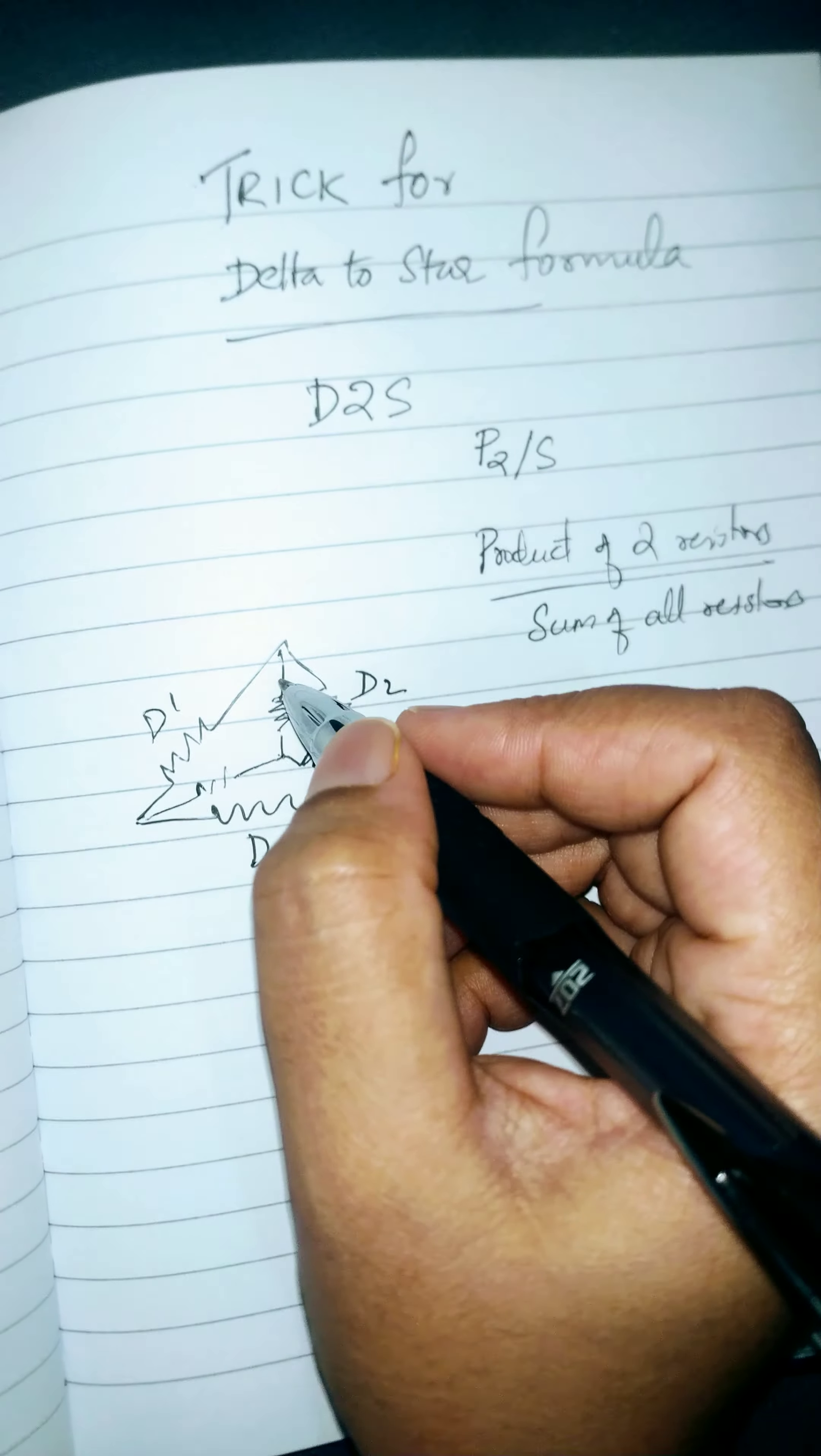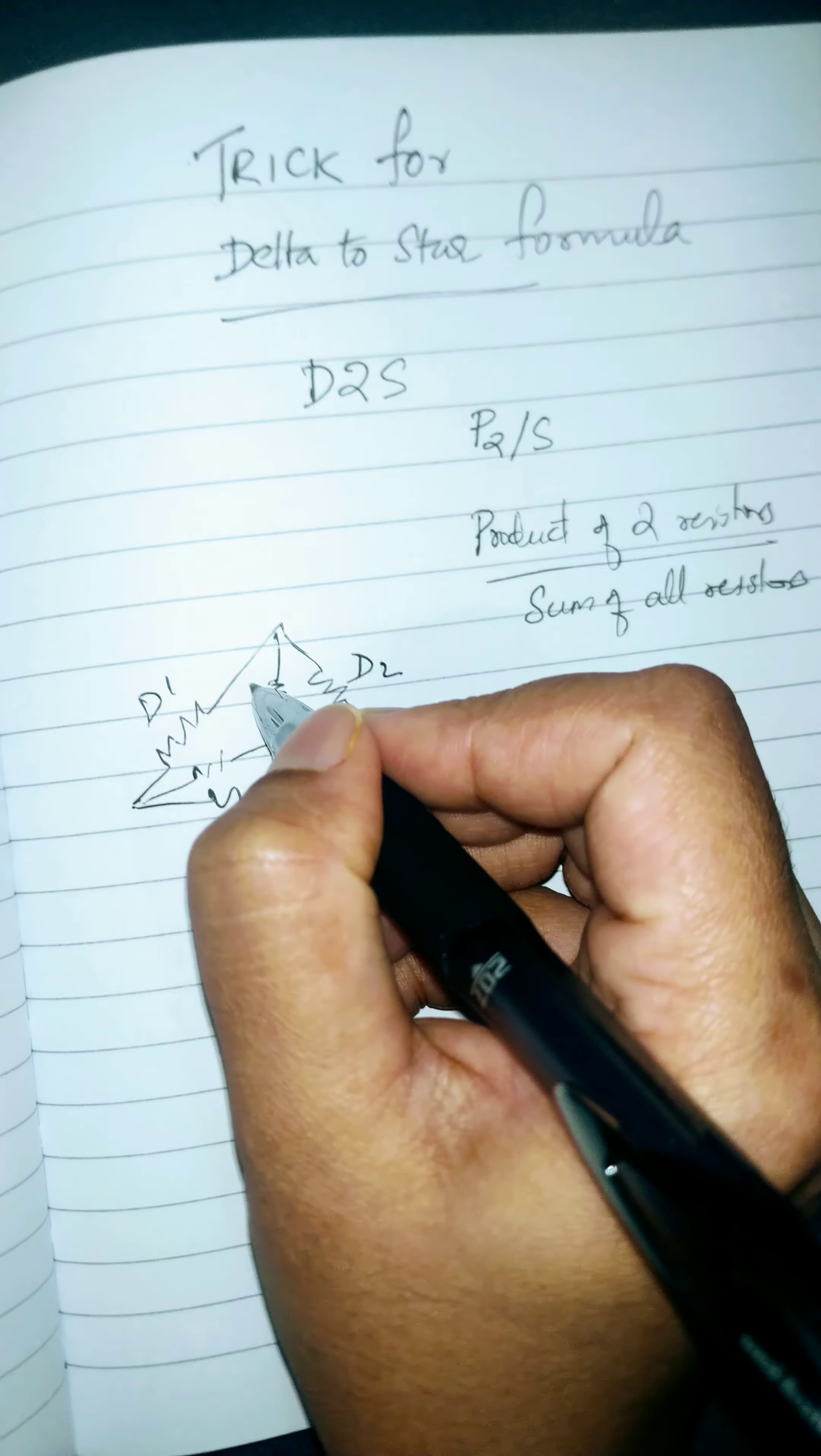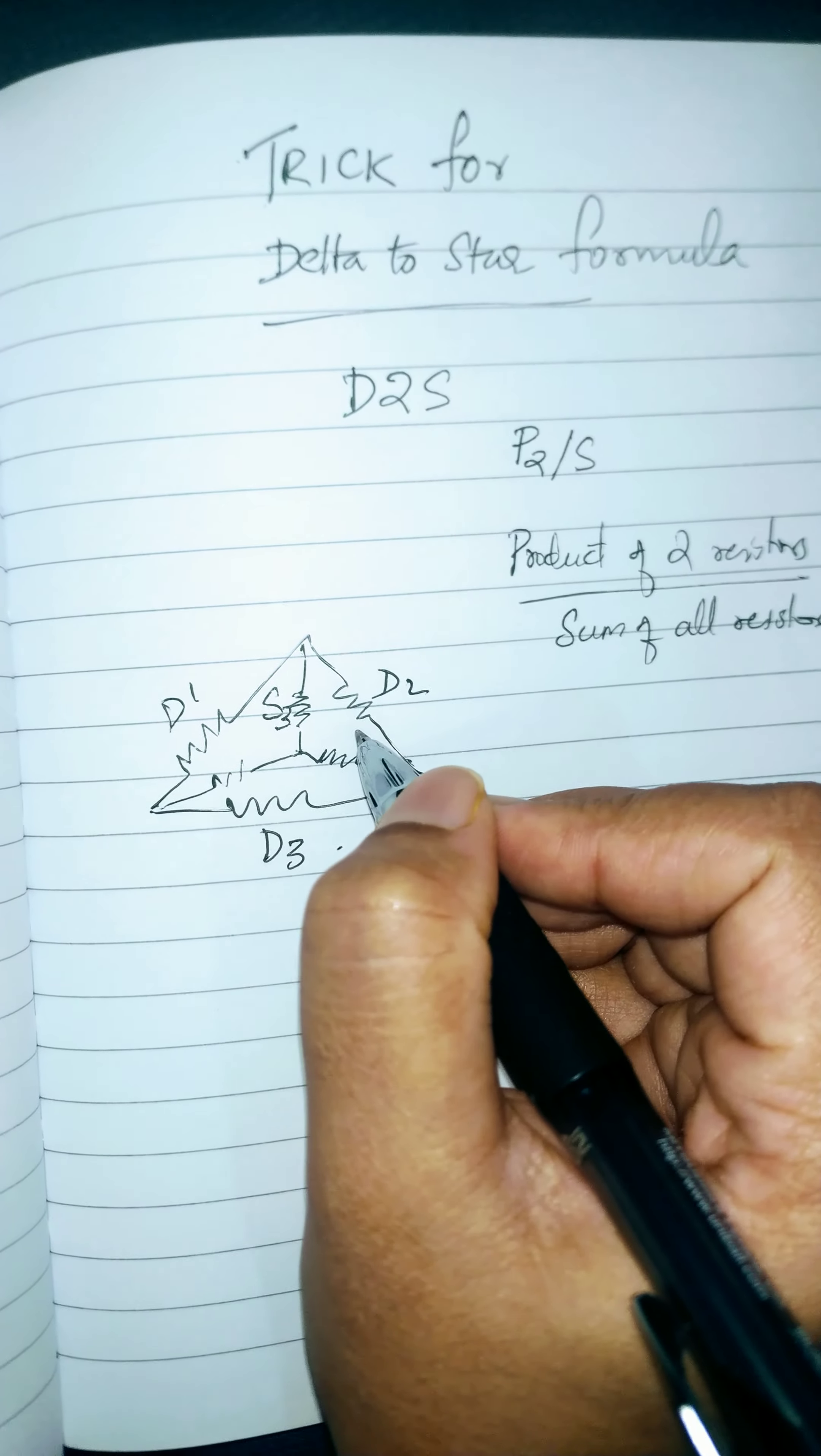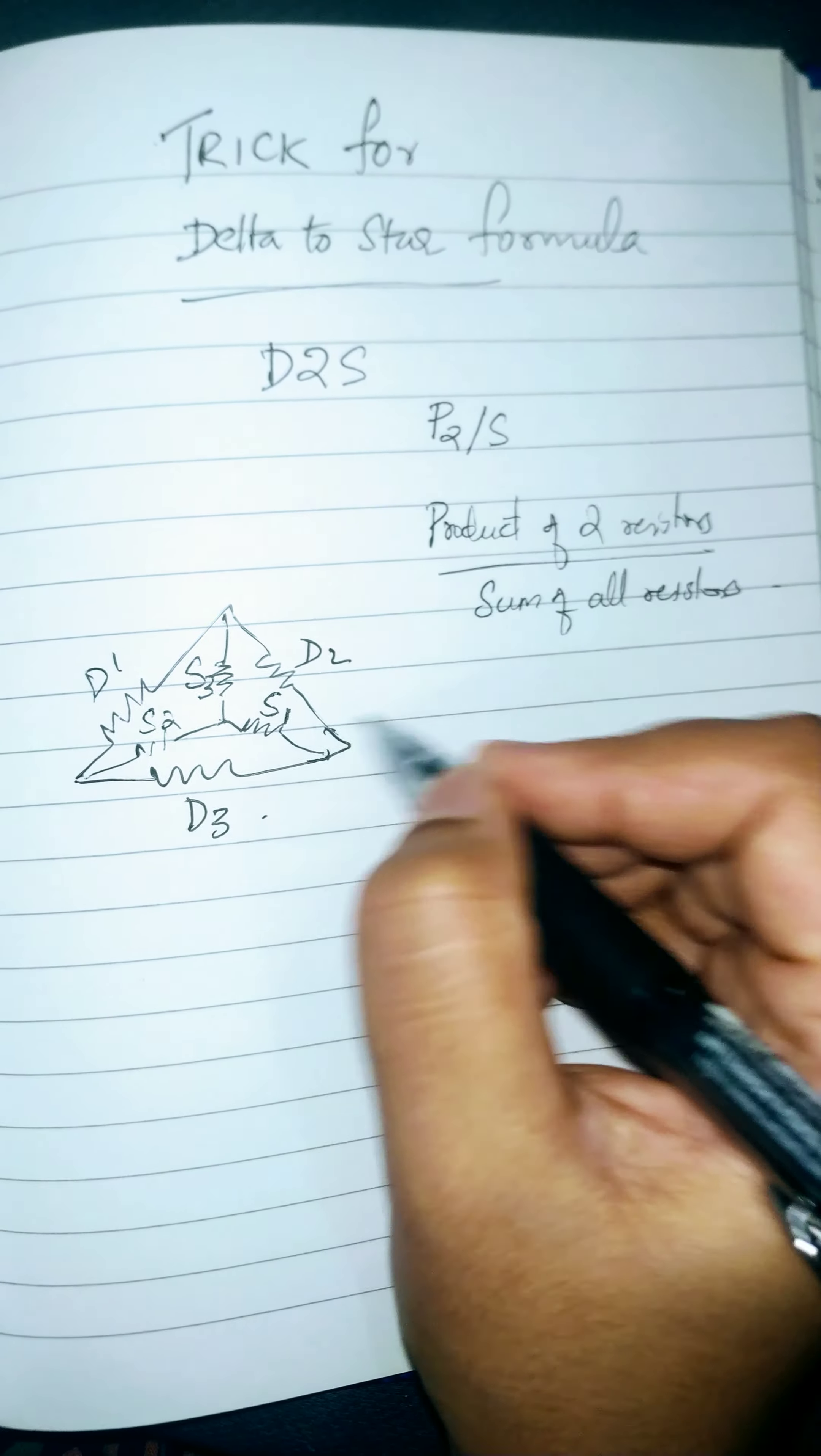This is how you connect the three resistors in star format inside this D1, D2, D3. Let's name the resistors. D1, D2 includes a star connected resistor, let's name it as S3. See the subscript 1, 2, and 3. D2, D3 includes S1, and D1, D3 includes S2.